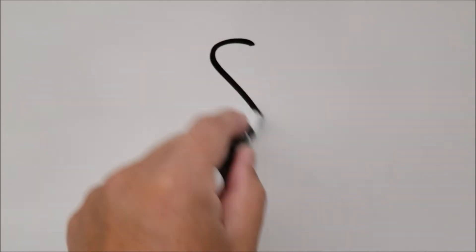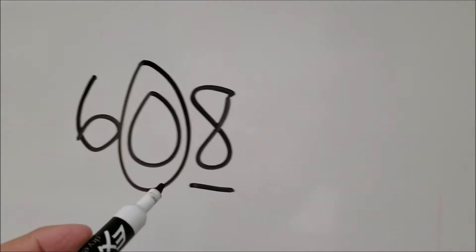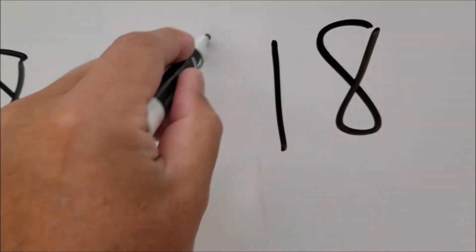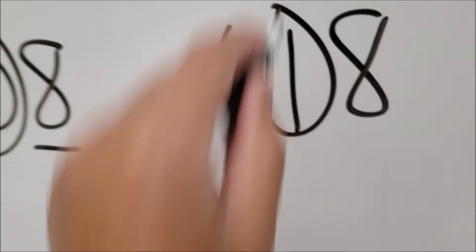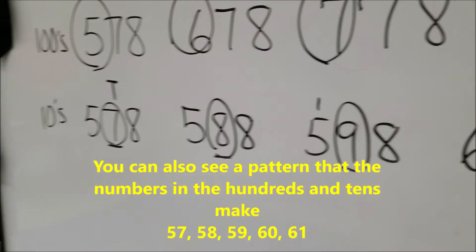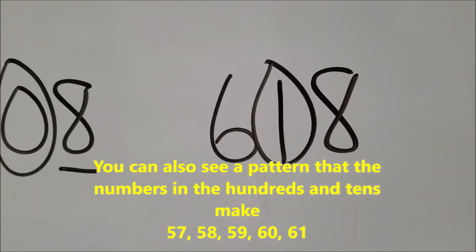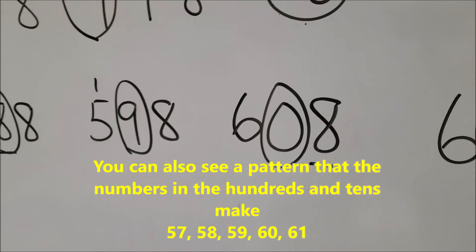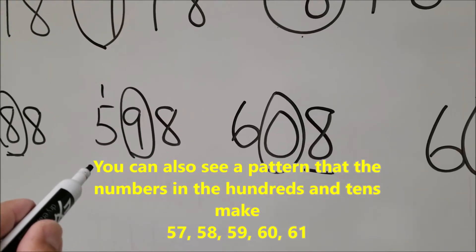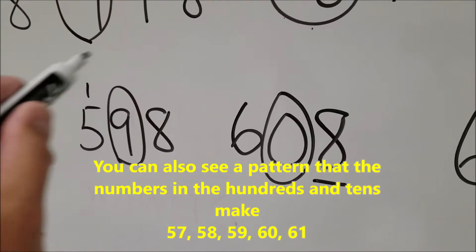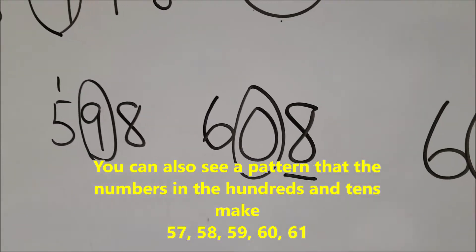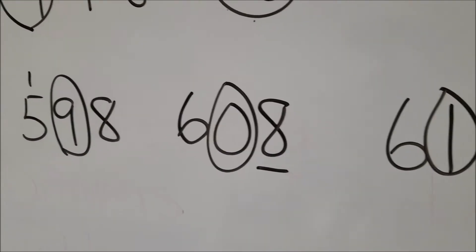And then we'll just continue with counting up. So 0, 1. And there is our pattern. 7, 8, 9. And there's the 10. And then we get to the 11. So they'll just have to know that this number in the 100s column, once we get into the 90s, it will go into the next 100s.